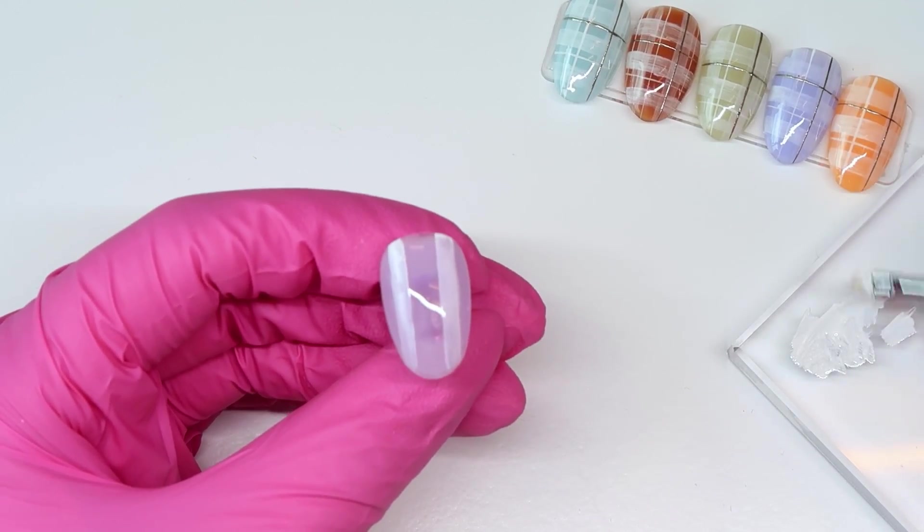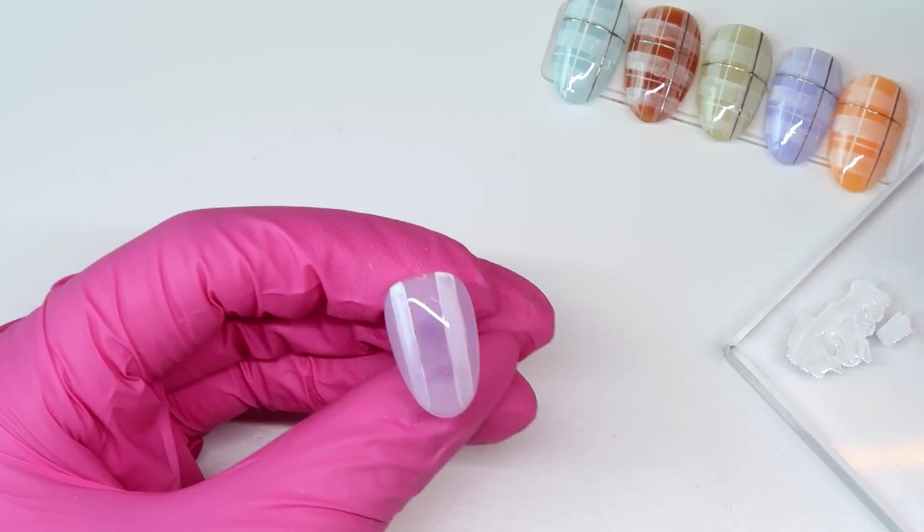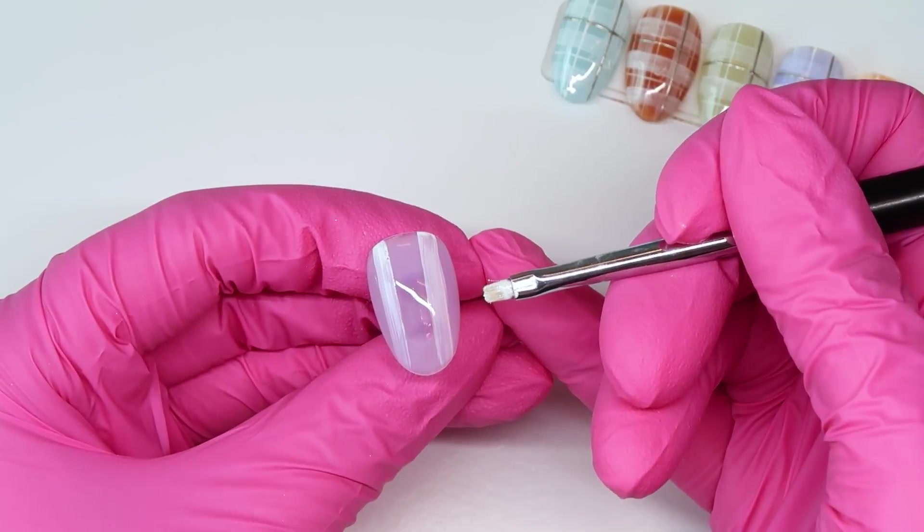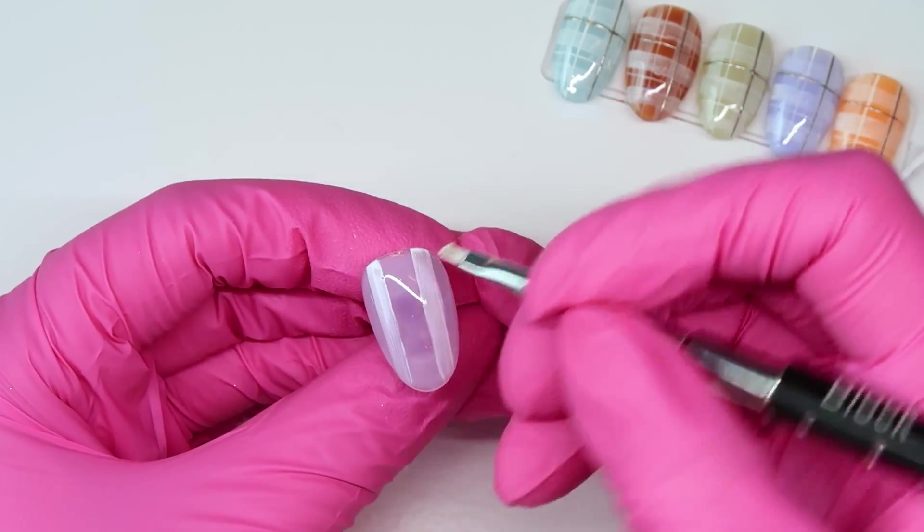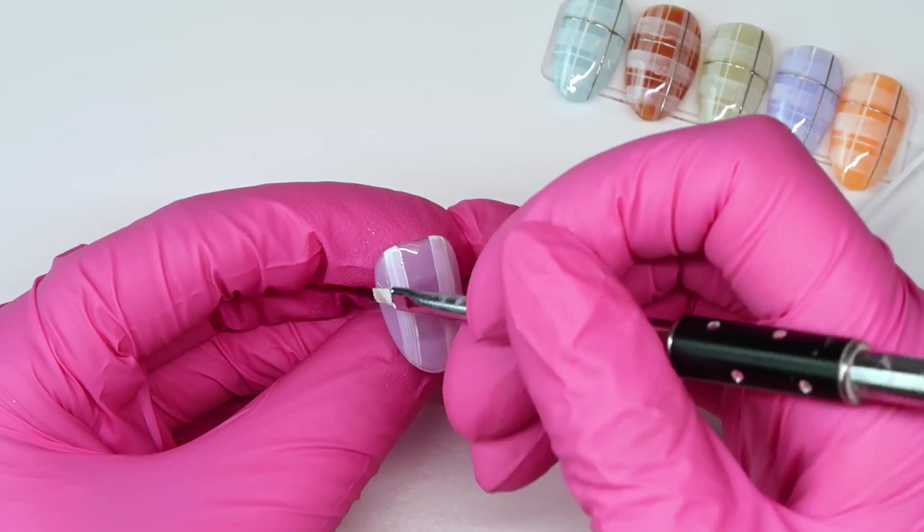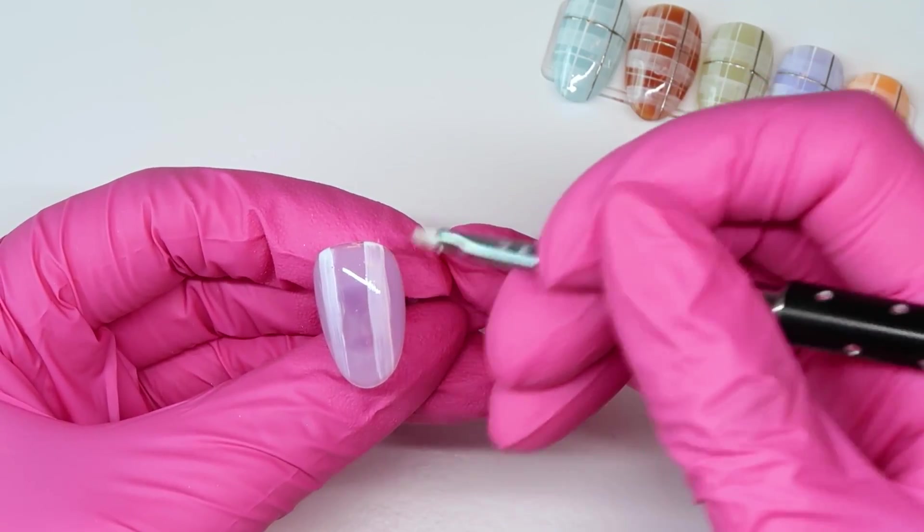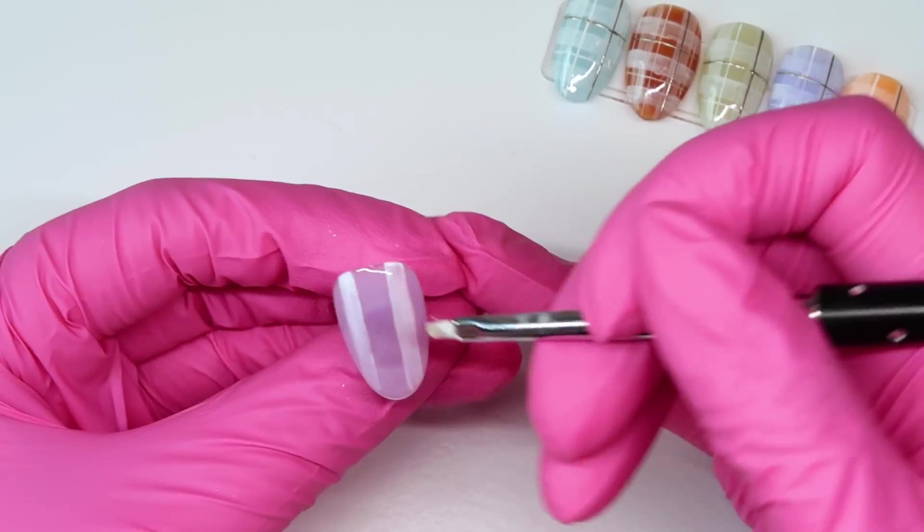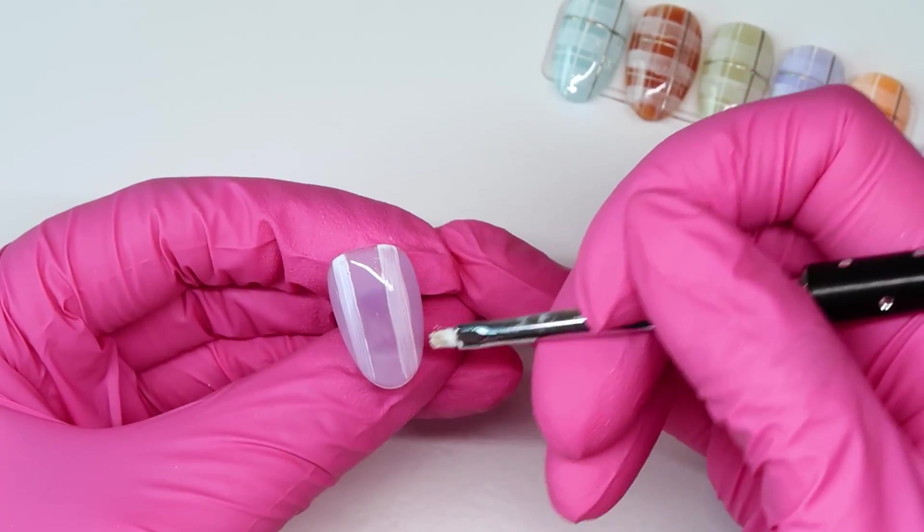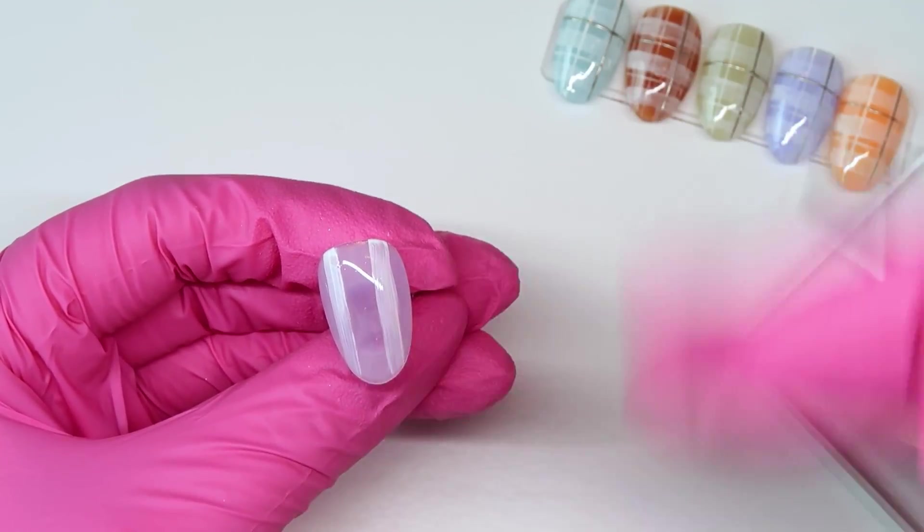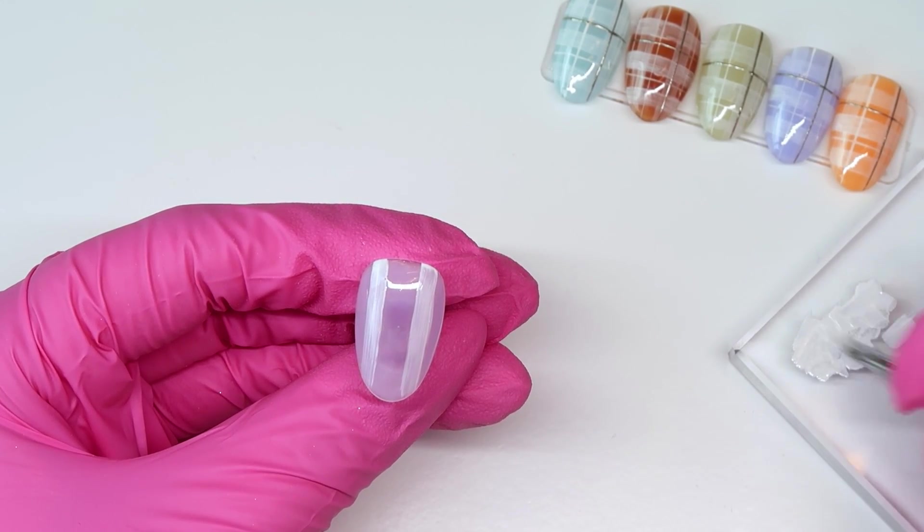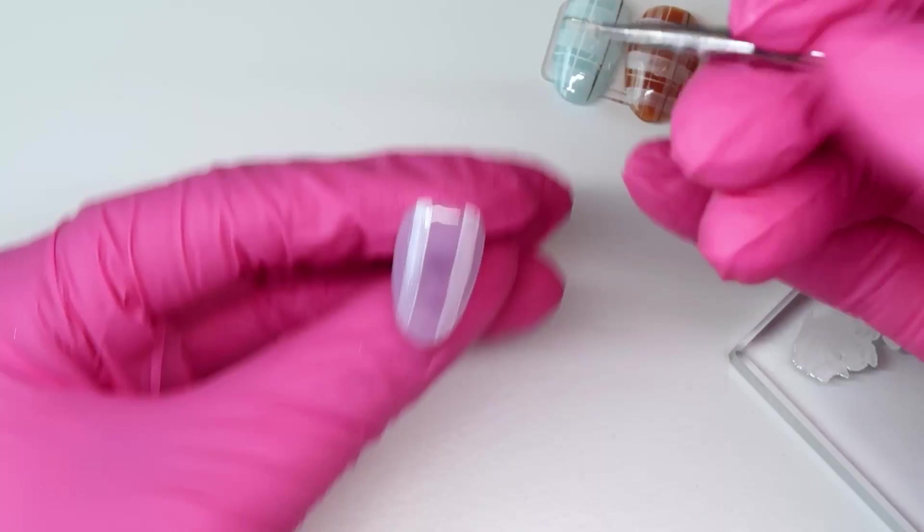So the reason I flash cure is because anytime you're going to cross over some other lines that you already made, if I didn't flash cure, it's going to kind of run together a tiny bit where I cross over. If you want to keep your lines super crisp where they meet, then you want to make sure and flash cure before you are going to create another line that crosses over.